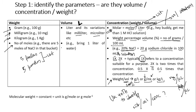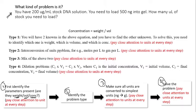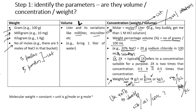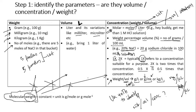If you learn this table, you will be able to easily identify whether a parameter is weight, volume, or concentration — completing the first step of the entire flowchart. One more term to remember: molecular weight. Although it says 'weight,' it does not fall into any of these three categories.